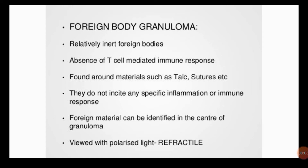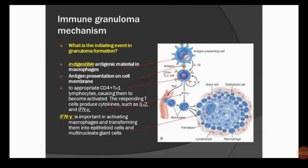Foreign body granuloma results from relatively inert foreign bodies, and there is an absence of T-cell mediated immune response. It is found around materials such as talc, sutures, and splinters. These do not incite any specific inflammation or immune response. Foreign materials can be identified in the center of the granuloma, as the foreign material persists, leading to granuloma formation. It can be visualized through polarized light.